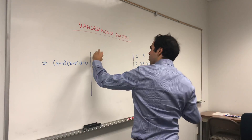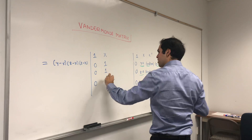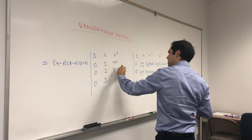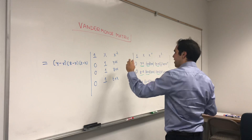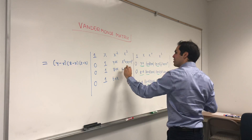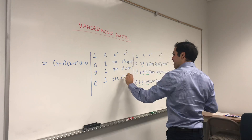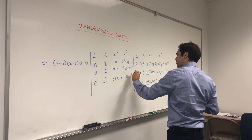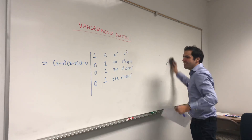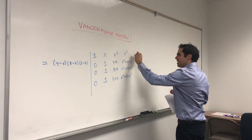After extracting the factors, we get (y−x)(z−x)(t−x) times the determinant of the matrix: first column (1, 0, 0, 0), second column (x, 1, 1, 1), third column (x², y+x, z+x, t+x), fourth column (x³, x²+xy+y², x²+xz+z², x²+xt+t²). This looks Vandermonde-ish, with 1, 1, 1, 1 in that second column.